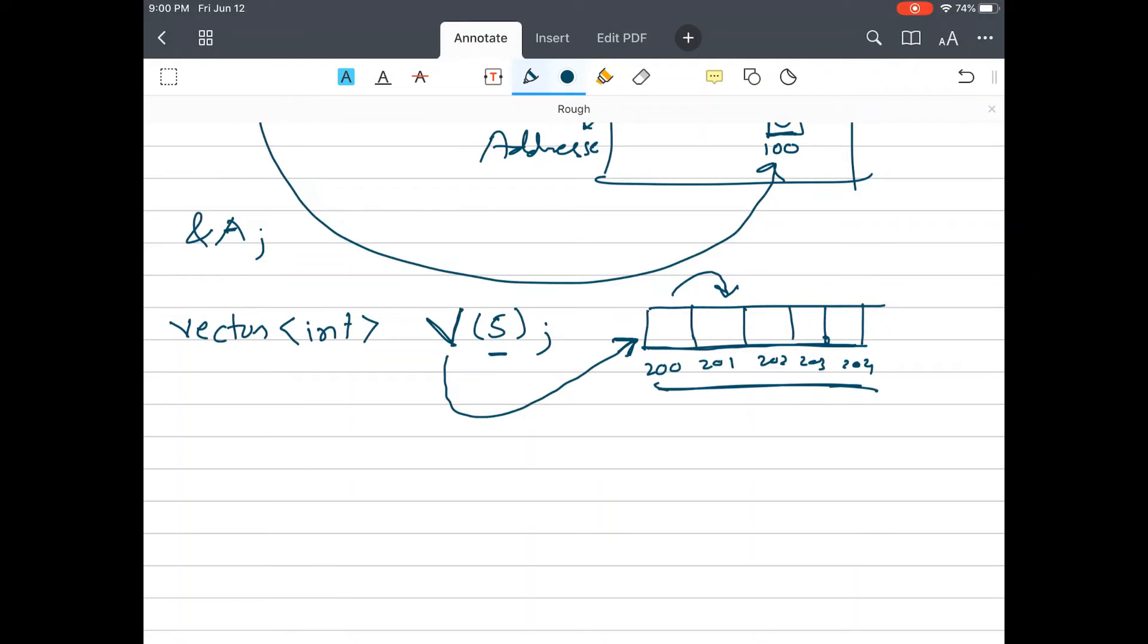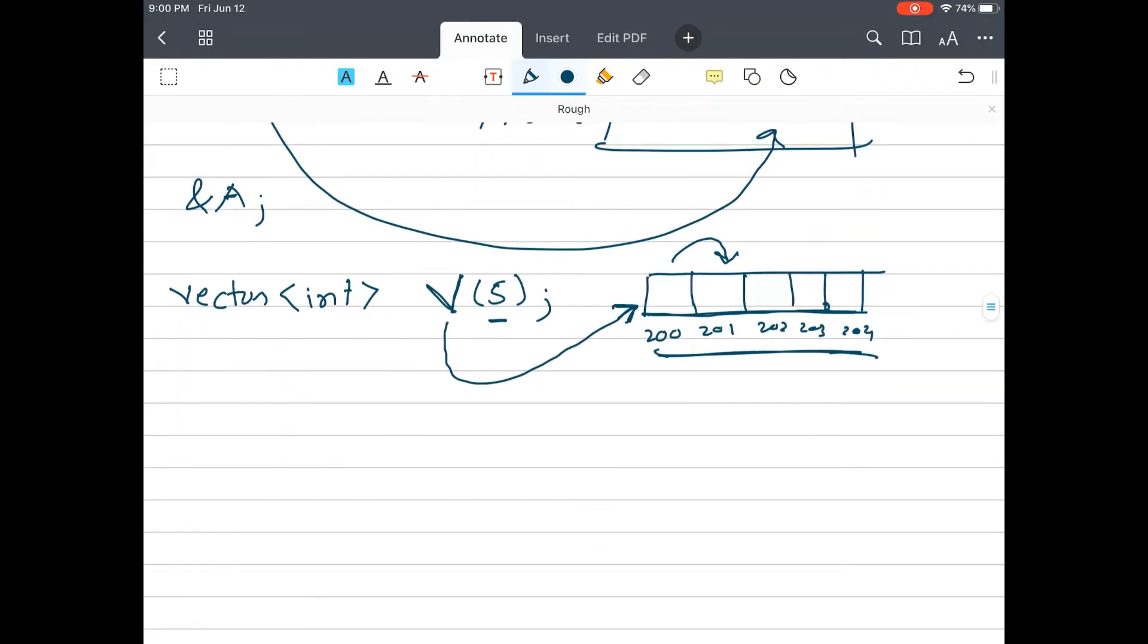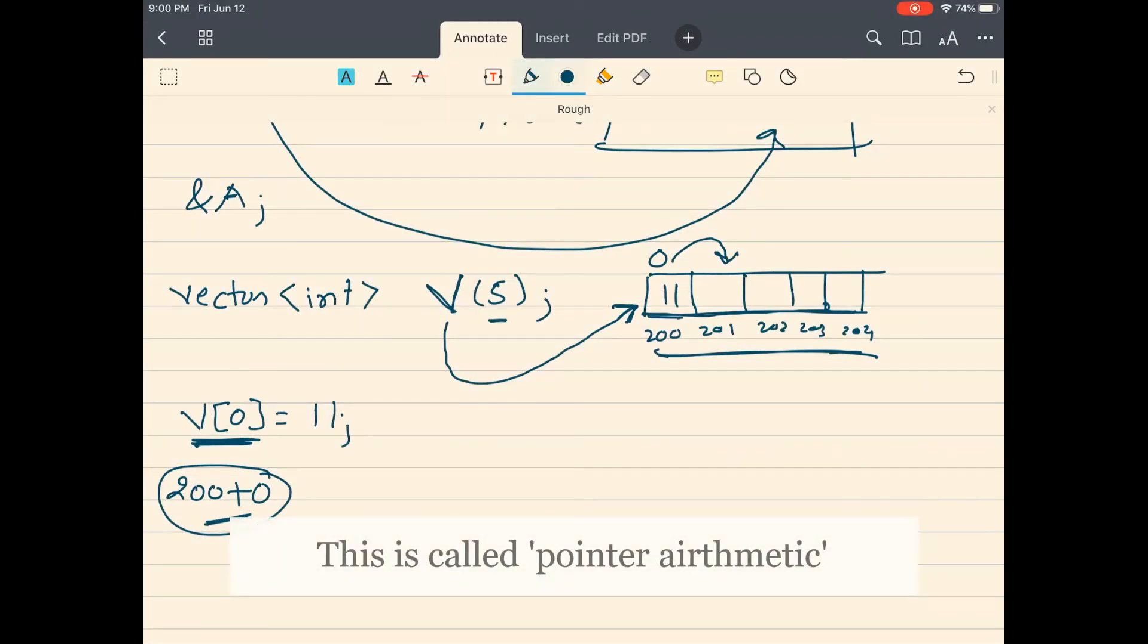So this V just points to the front. If you want to assign some value to this, we all know we do this because it starts with zero index: we put zero and let's say assign 11 to this, so this is 11. What this syntax is actually doing is saying, okay, go to this location 200, add zero to it, and put 11 inside. So this is 200 and 11 gets into the 200 location.